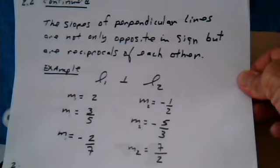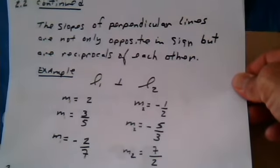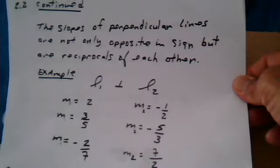The slopes of perpendicular lines are not only opposite in sign, but are reciprocals of each other.